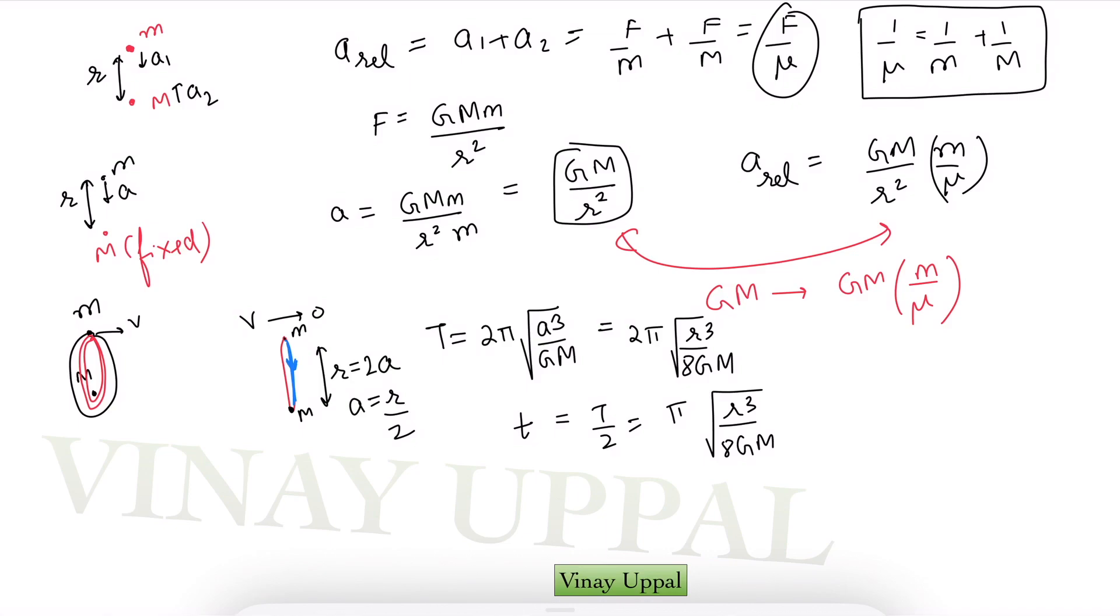Now if both particles are moving all I have to do is replace GM or rather multiply GM by this factor of m/μ. Let's do that on the next page. So we need to multiply it by m/μ and because both the particles are of the same mass μ will be equal to m/2 according to the reduced mass formula. So we are basically replacing GM by 2GM.